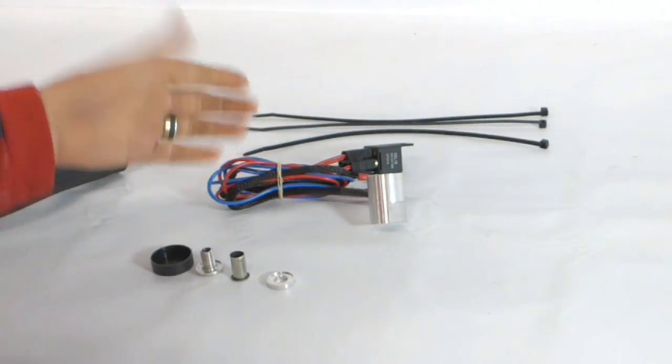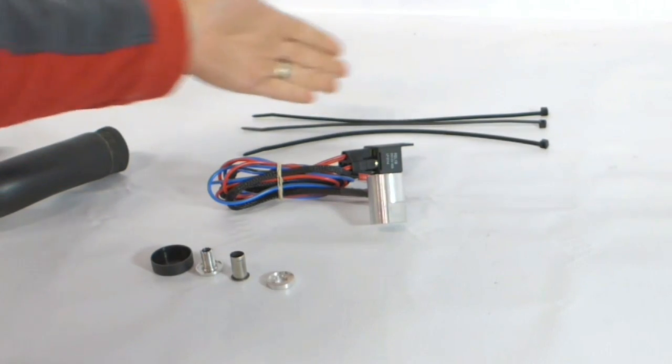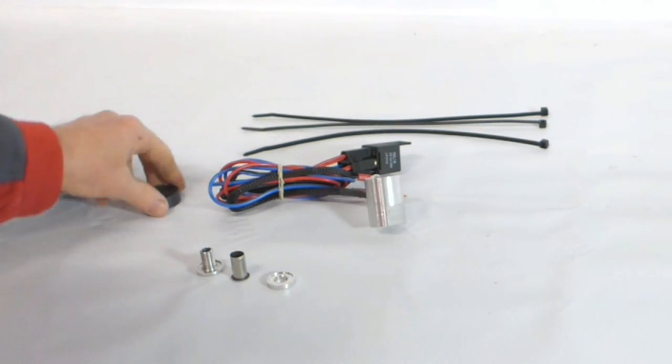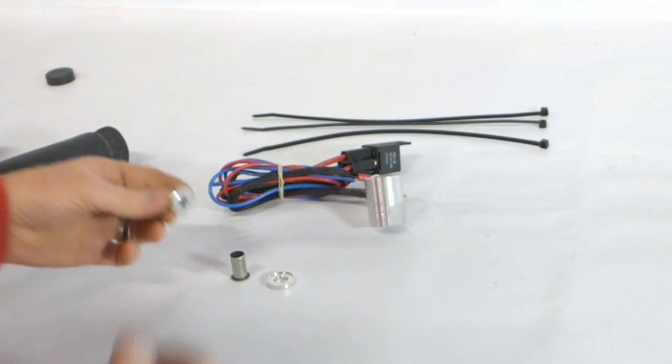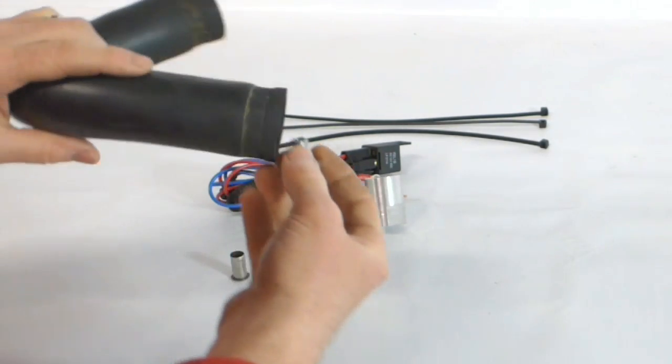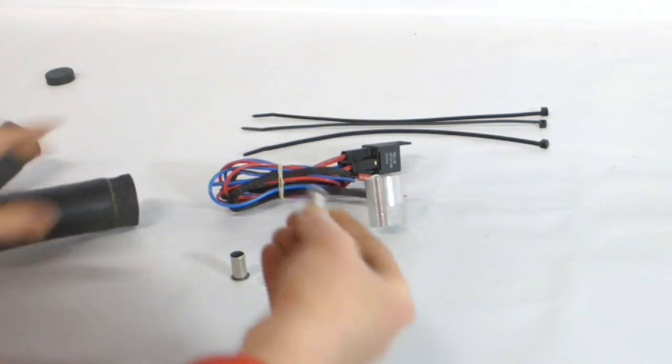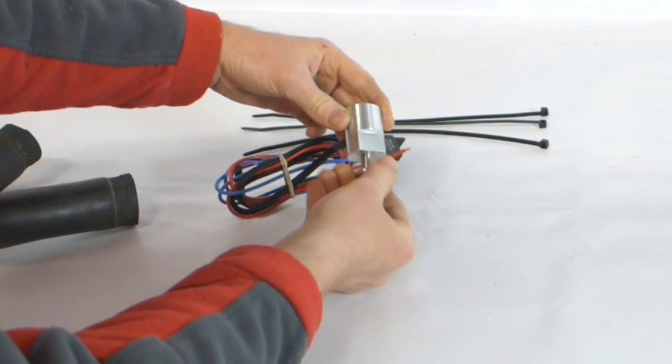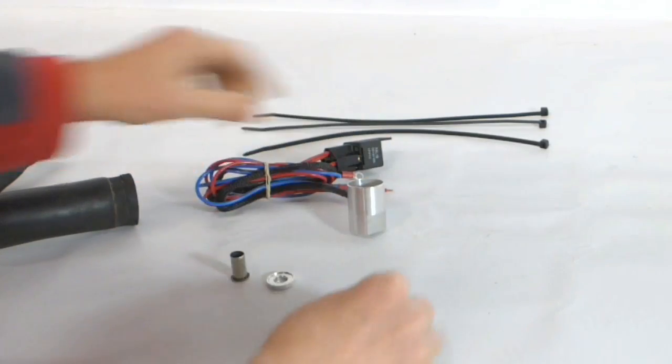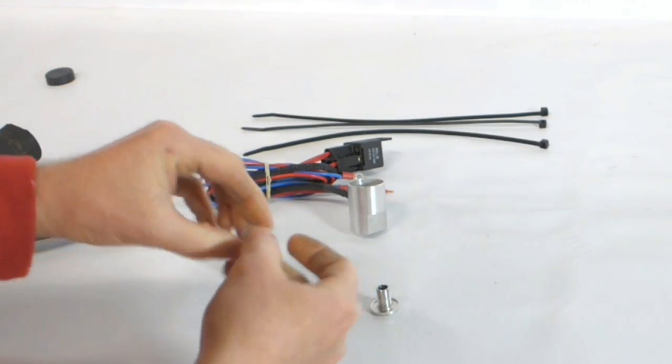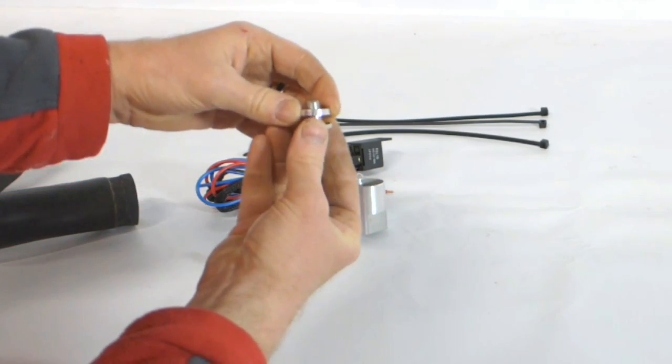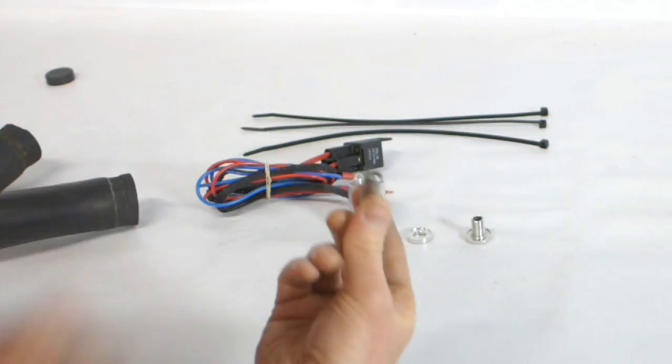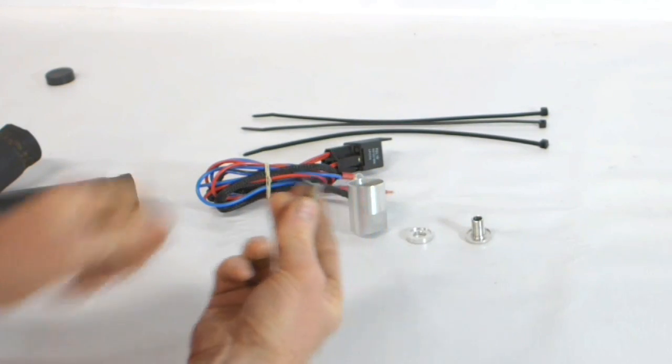In the kit we have obviously the controller itself, cable ties for the wiring, the cap, the dust cap which I'll show you later. The takeoff, now this goes inside the hose, has a threaded portion which screws into the bottom of the electronic fan controller. There's a special sealing pressure washer which compresses the hose to act as the seal, and then we have the hole cutter for your rubber or silicone hose.